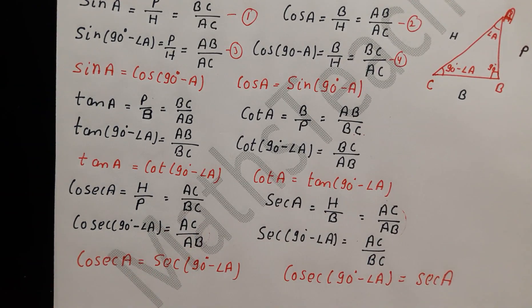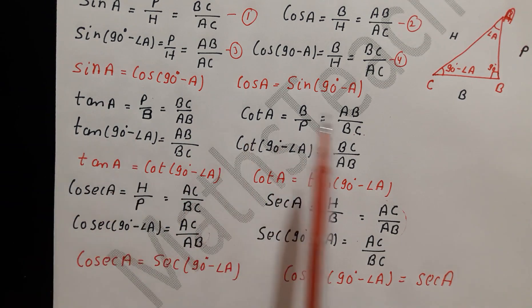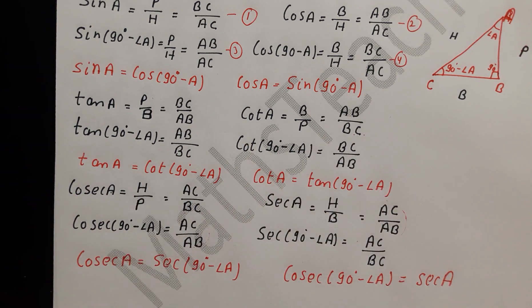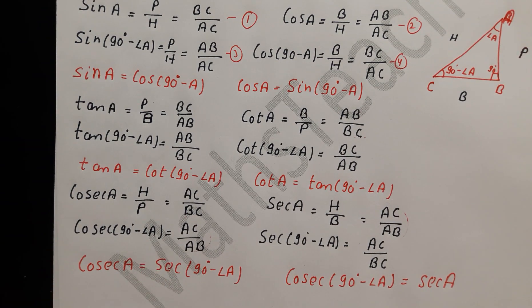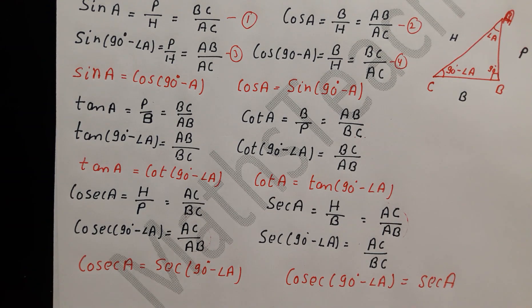So this is the trigonometric ratio of complementary angles. We will use all of these in exercise 8.3. I hope you understand how to make the trigonometric ratio of complementary angles. Please subscribe, like, and press the bell button. Thank you!